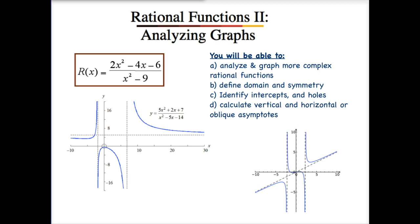You'll notice by these graphs that our rational functions are definitely more complex. In addition to having now three legs on some of them, we may even have oblique asymptotes. They're all very different, but as long as we follow certain steps, you should be successful at graphing these.